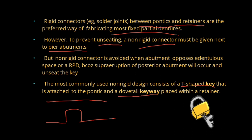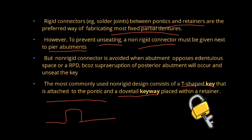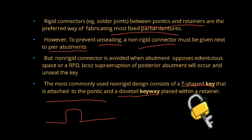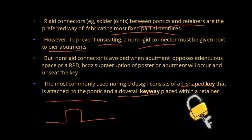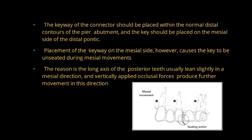To recap: first, we defined what a pier abutment is; second, normally rigid connectors are used; third, a non-rigid connector is used in cases of pier abutment; fourth, it won't be used when there is an edentulous opposing arch or an RPD due to supra-eruption and unseating of the key. Now, the design of the non-rigid connector: the keyway should be placed within the distal part of your pier abutment, and the key should be placed on the mesial side of your distal pontic.